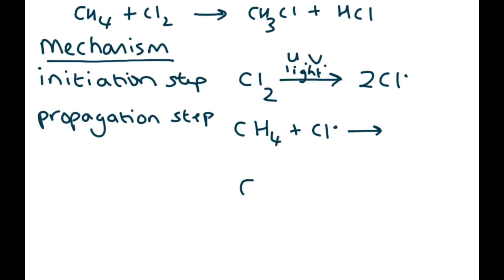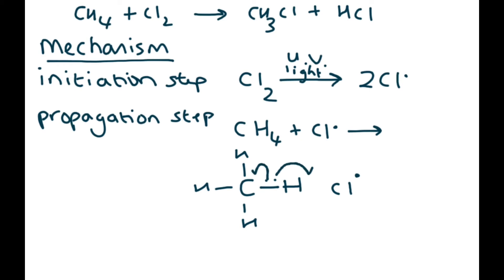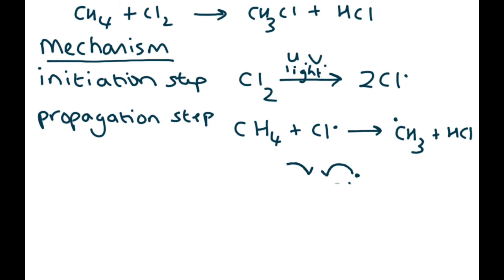Drawing it out: we have methane and a chlorine radical — remember, a radical is an unpaired electron. There are two electrons in the C–H covalent bond. One electron goes back onto the carbon and one forms a bond with the chlorine. So we end up with a CH₃ carbon radical and HCl. That's the first propagation step.